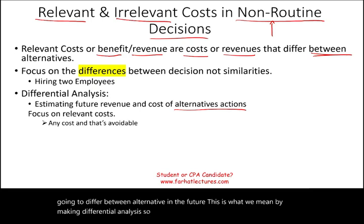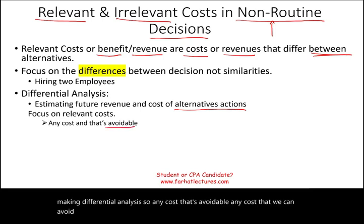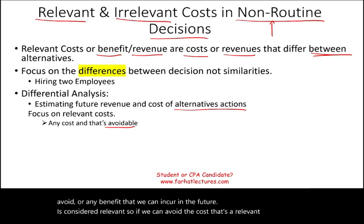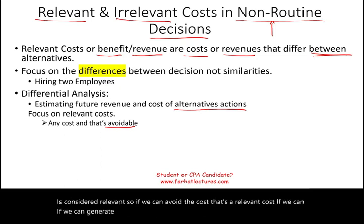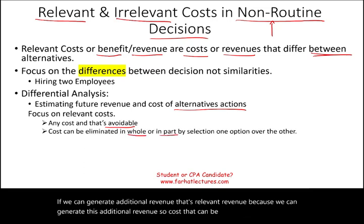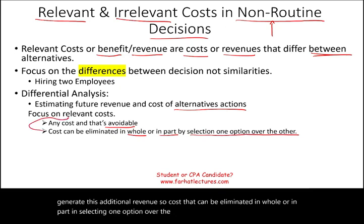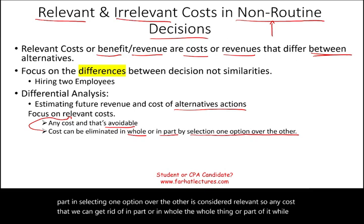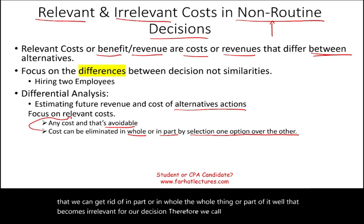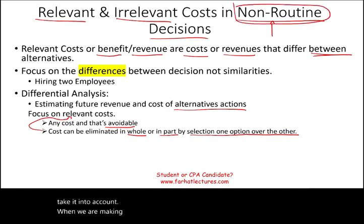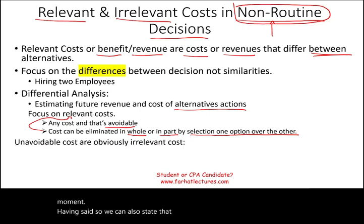Any cost that's avoidable — any cost we can avoid — or any benefit we can incur in the future is considered relevant. If we can generate additional revenue, that's relevant revenue. Cost that can be eliminated in whole or in part by selecting one option over the other is considered relevant. Therefore, unavoidable costs are obviously irrelevant costs because they cannot be avoided.